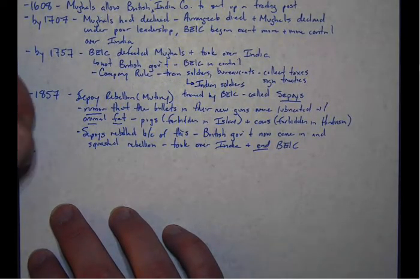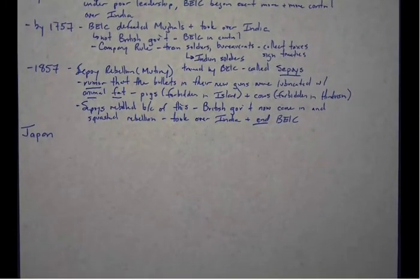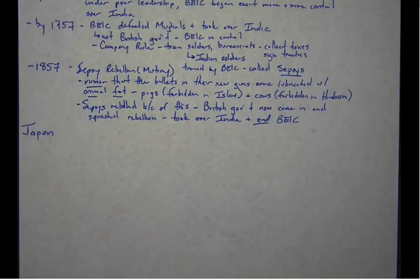So Japan. Now, if you remember back to before break, when we talked about what was going on in China, the British came into China, they threatened to blow up the Grand Canal, the Chinese surrendered and the Chinese signed these unequal treaties with the British.